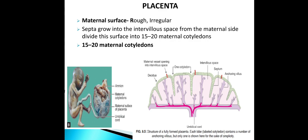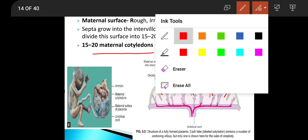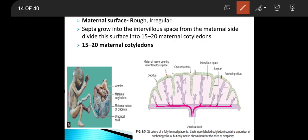The maternal surface is rough and irregular. On the maternal surface there are 15 to 20 maternal cotyledons, formed due to extensions of the decidua called endometrial septa. Each cotyledon has 2 to 3 anchoring villi.